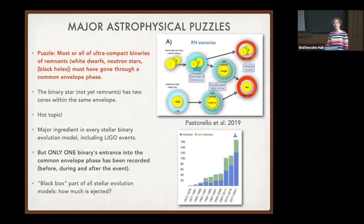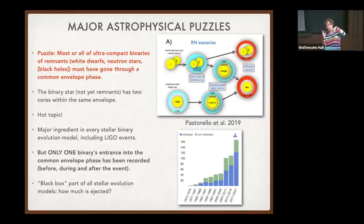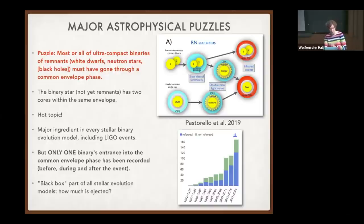This is a major ingredient in every stellar binary evolution model. These models are also used in modeling the population of LIGO events. This is very much a black box — there's a huge interest in this topic. The statistics are that there are five merger remnants in our own galaxy that happened during the lifetime of modern observations, and only one — the V1309 Sco object — was actually observed to have been a binary before entering the common envelope event.